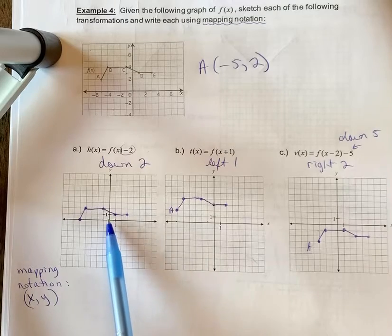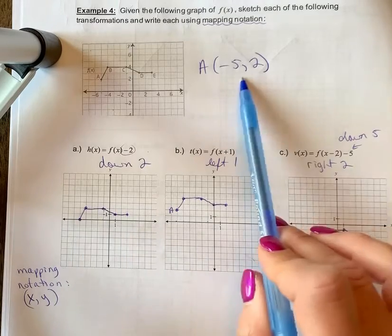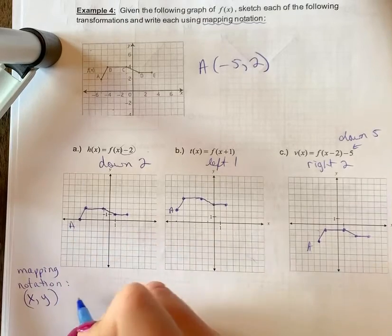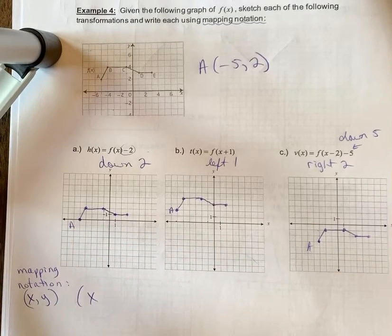Nothing happened to the x value. It stayed at negative 5. This was negative 5 and 2, using A as the reference point. Nothing happened to x because when you move the graph up and down.